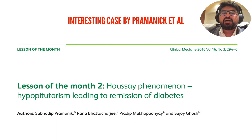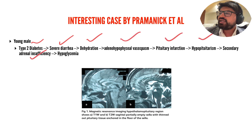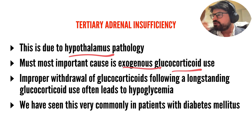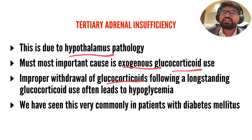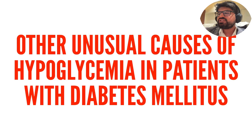A notable Indian case by Pramanik et al. from Kolkata describes Houssay's phenomenon in a patient with type 2 diabetes who had severe diarrhea leading to dehydration, adenohypophysial hypovasospasm, pituitary infarct, hypopituitarism, secondary adrenal insufficiency, and ultimately hypoglycemia. Tertiary adrenal insufficiency is due to hypothalamic pathology; the most important cause is exogenous glucocorticoid use. Rapid or improper withdrawal of long-standing glucocorticoids can cause hypoglycemia — especially relevant in patients with steroid-induced diabetes who are on glucocorticoids.